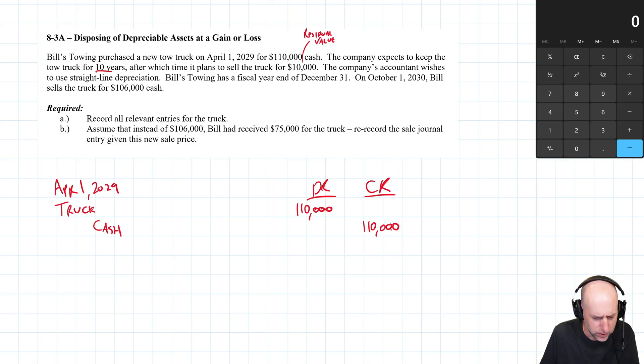What is our next relevant date? The next relevant date is our fiscal year end. Even though nothing happens, we don't sell the truck, we're just driving it around, on December 31st we need to do a journal entry. What do we need to do? Depreciation. This truck is not worth $110,000, it will have dropped in value, we got to figure out how much.